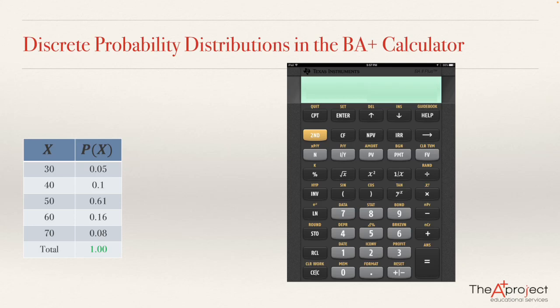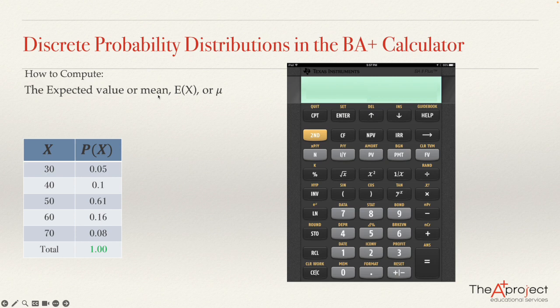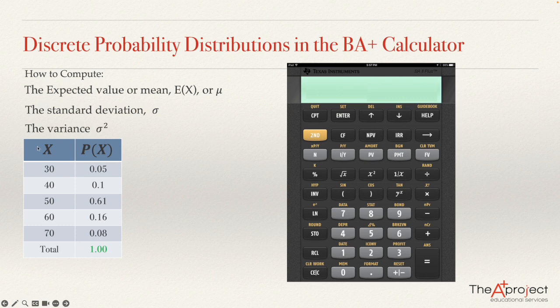In this video, I will be explaining how to use the calculator BA Plus from Texas Instruments to solve problems related to discrete probability distribution. Basically, what I'm going to explain is how to compute the mean, the expected value, the standard deviation, and the variance, in case that we have a table with all the possible values of the variable and their probabilities.